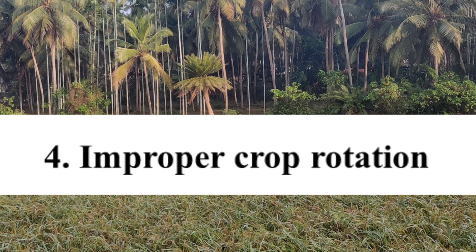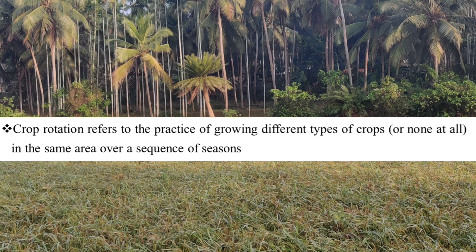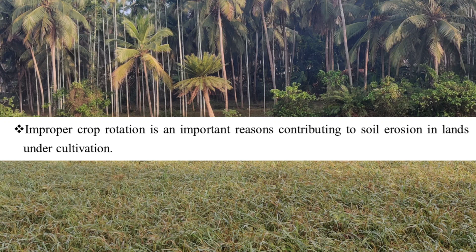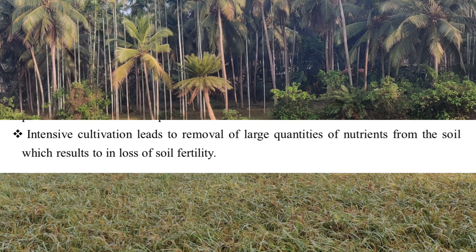The fourth cause is improper crop rotation. Crop rotation refers to growing different types of crops in the same area over a sequence of seasons. Improper crop rotation is an important reason contributing to soil erosion in cultivated land. Due to land scarcity, population growth, and economic pressures, farmers have shifted from balanced cereal-legume rotation towards intensive cropping of commercial crops, leading to removal of large quantities of nutrients and loss of soil fertility.